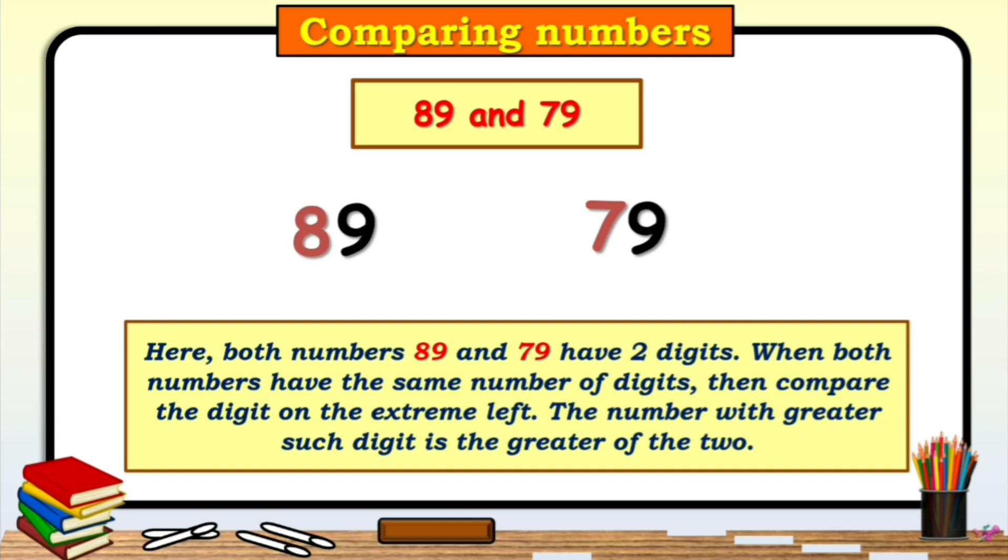So, children, tell me, which number is greater number, 8 or 7? Yes, correct. Number 8 is greater than 7. So, here number 89 is greater than 79.